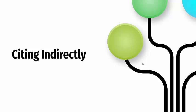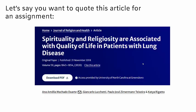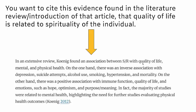Hello and welcome to a quick video about citing indirectly. Let's say you want to quote this article for an assignment. The article is 'Spirituality and Religiosity are Associated with Quality of Life in Patients with Lung Disease.' You want to cite evidence found in the literature review or introduction of that article about quality of life related to spirituality of the individual.